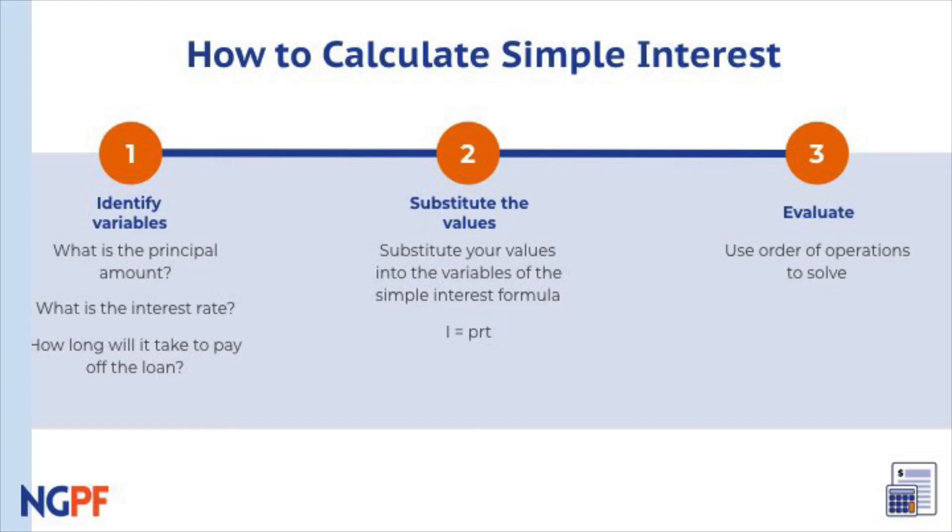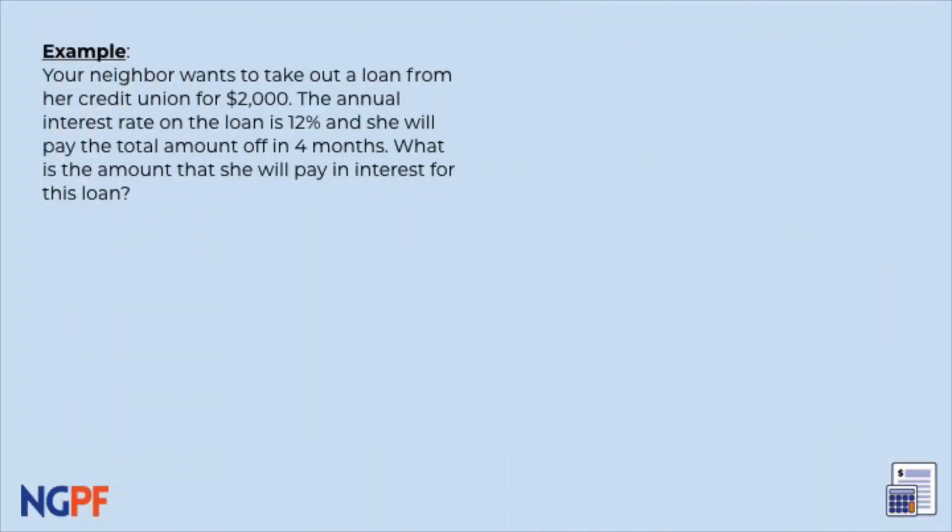Now it's your turn. Your neighbor wants to take out a loan from her credit union for $2,000. The annual interest rate on the loan is 12%, and she will pay the total amount off in four months. What is the amount that she will pay in interest for this loan?